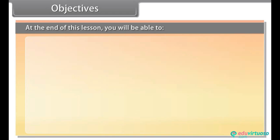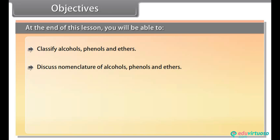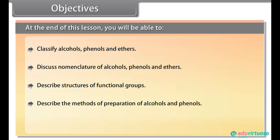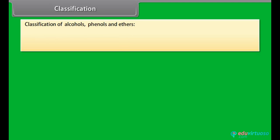Objectives. At the end of this lesson you will be able to: classify alcohols, phenols and ethers; discuss nomenclature of alcohols, phenols and ethers; describe structures of functional groups; describe the methods of preparation of alcohols and phenols; and describe physical properties of alcohols and phenols.